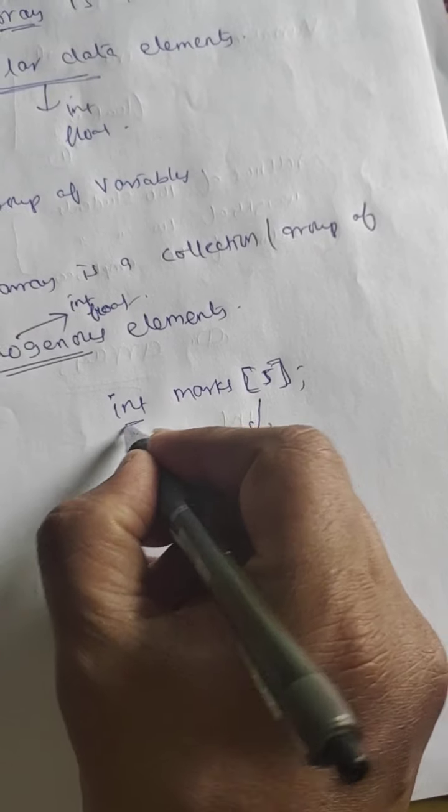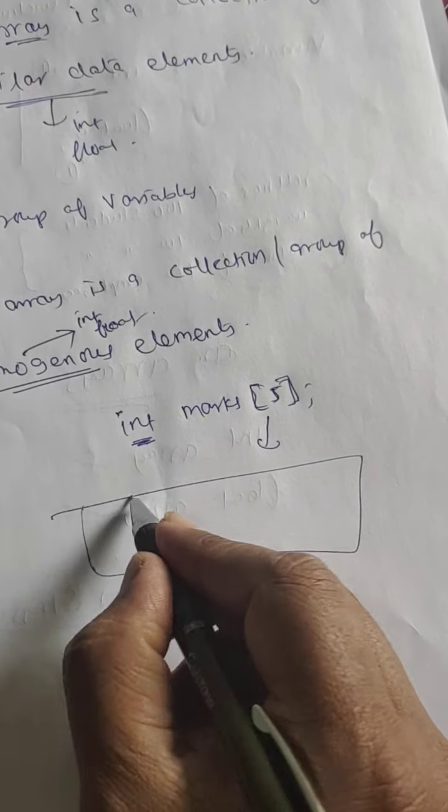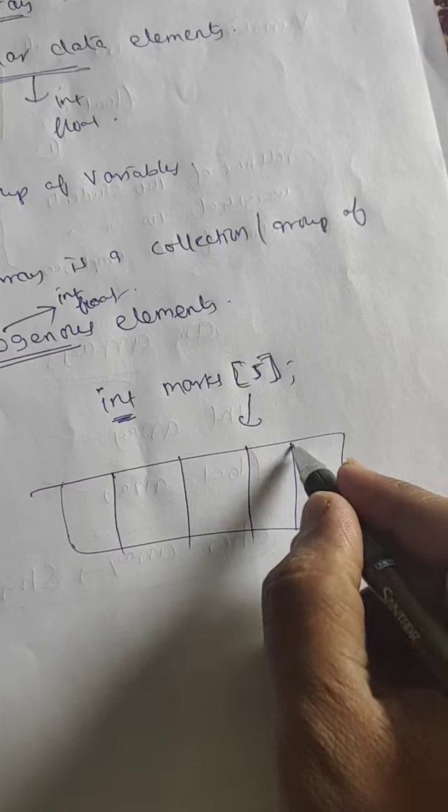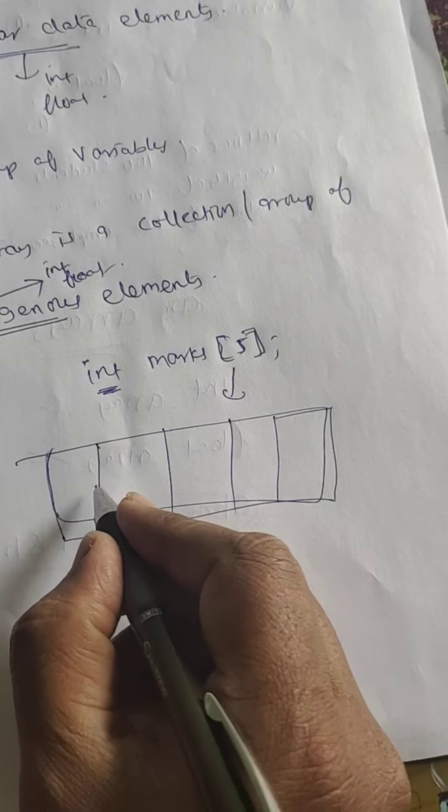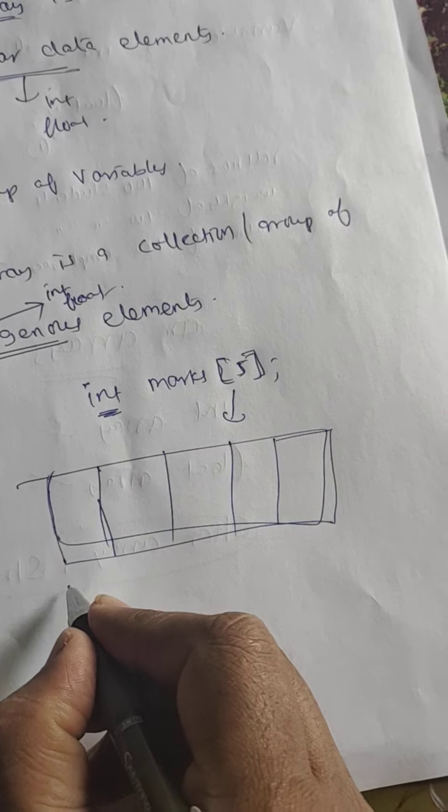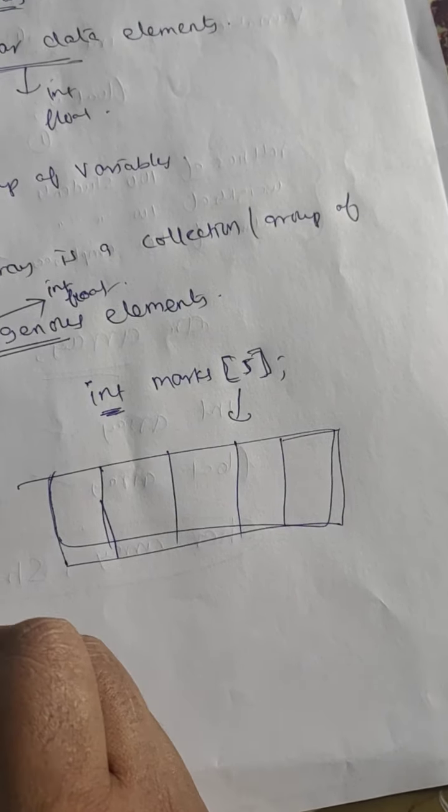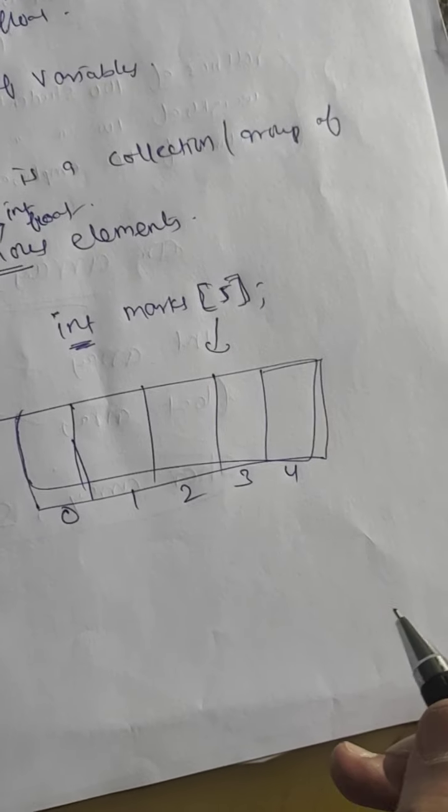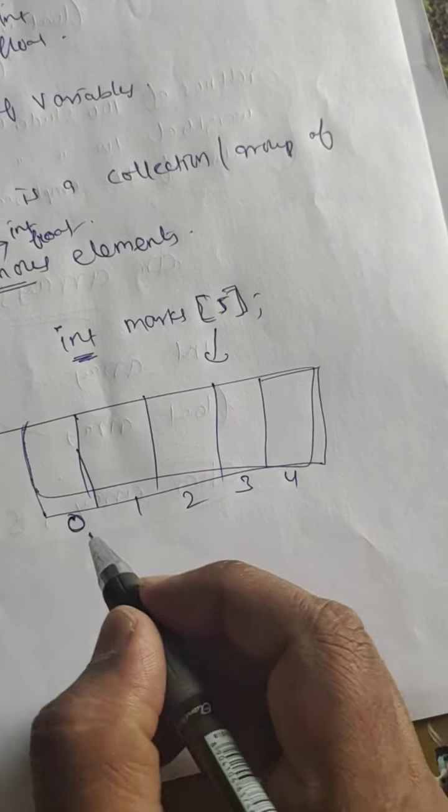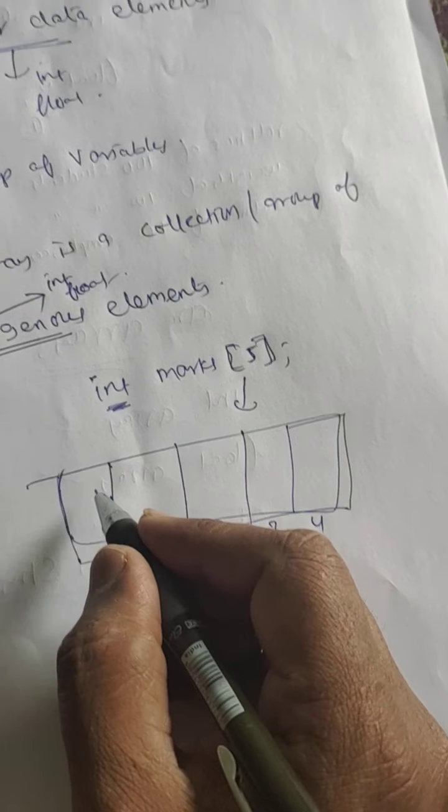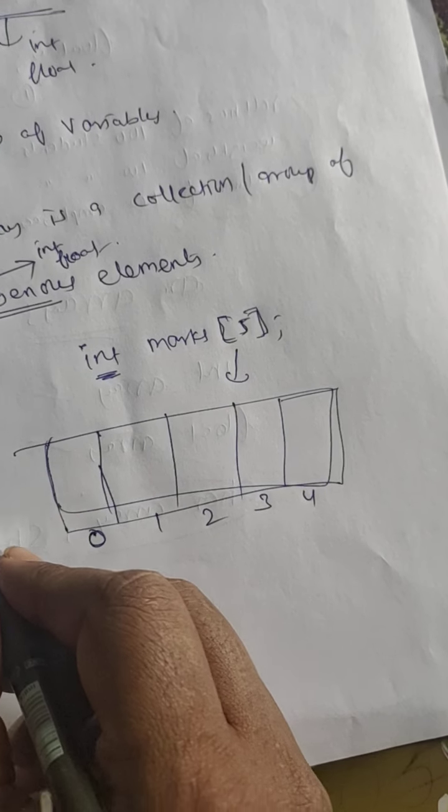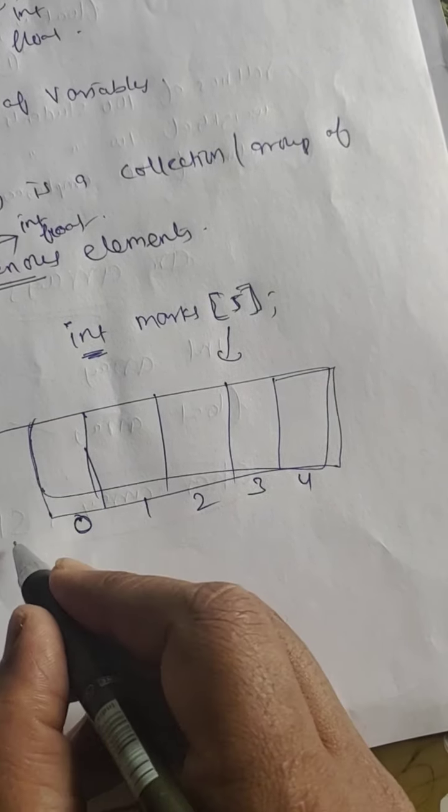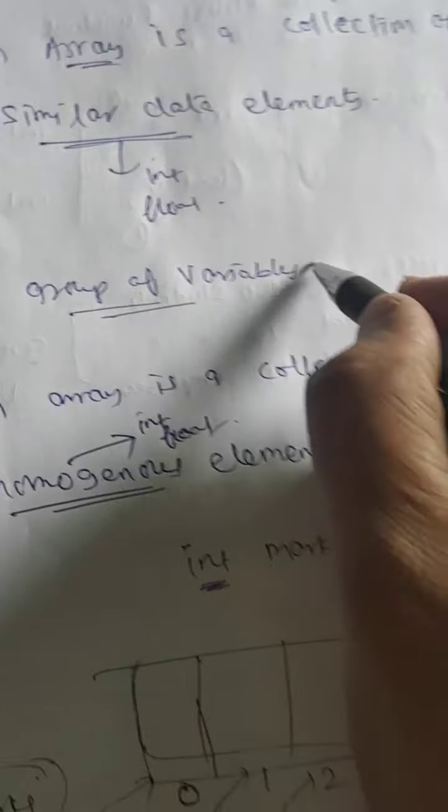It is integer type array, so the compiler will allocate five locations in the memory, each of two bytes. So the name of the array is marks - first student marks, second student marks, third student marks, fourth student marks, fifth student marks. So the array will consist of a name, for example marks. Every element will also have the same name.